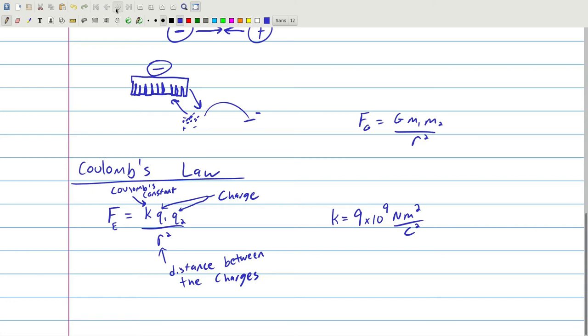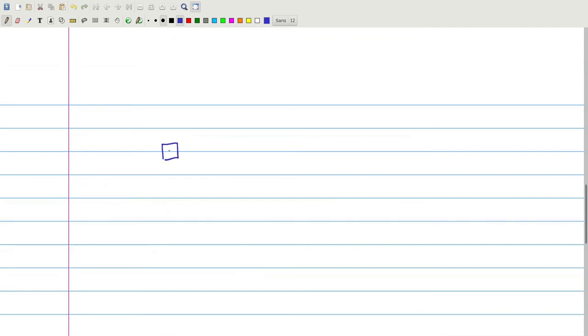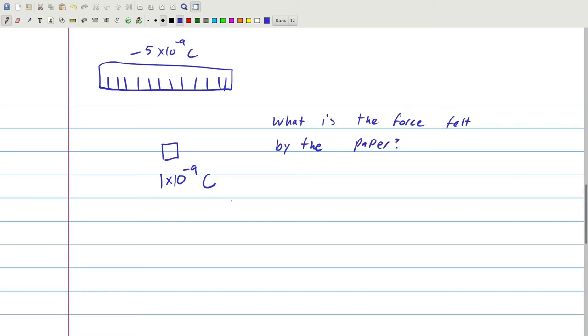So let's take, for instance, let's imagine something here. Let's say that we have a tiny piece of paper here, and the charge of this tiny piece of paper is, I don't know, let's make the math easier. 1 times 10 to the negative 9th Coulombs. And let's say we have a comb up here, and let's say the comb has a charge of, let's make it negative, how about 5 times 10 to the negative 9th Coulombs. And I want to know what is the force felt by the paper.